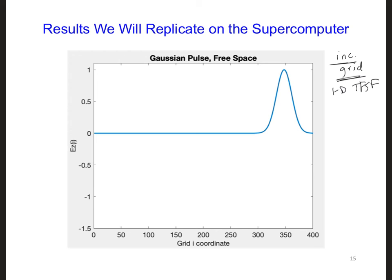Go ahead and run the code that's posted or the one that you created. You should see a plane wave — a Gaussian pulse — propagating through free space across the screen. The source is here and it's in free space, so it'll just propagate all the way across the screen. Here's a snapshot of the pulse after it has propagated for the same number of time steps as in the total field scatter field assignment. Make sure you can recreate these results before moving on.